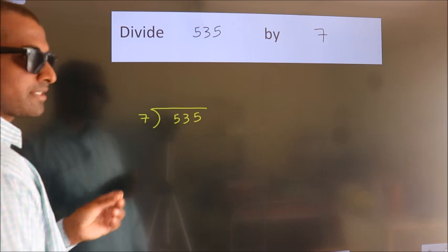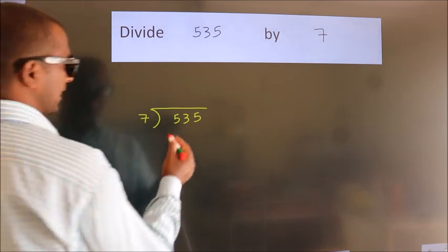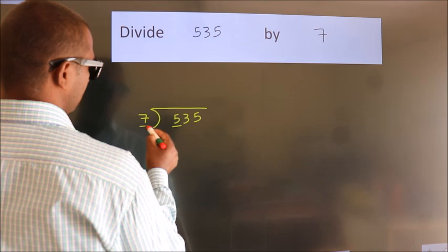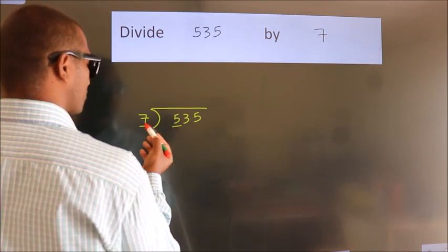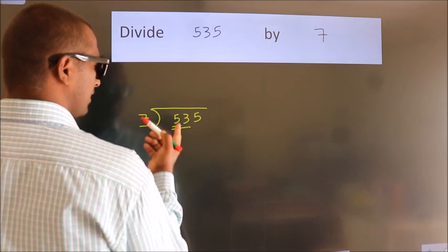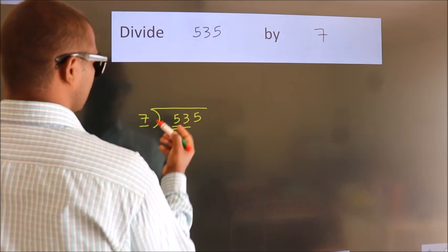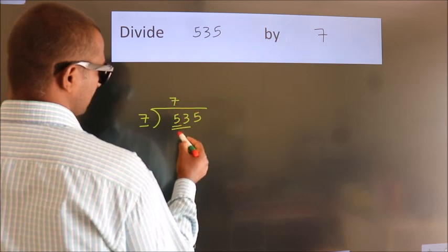This is your step 1. Next, here we have 5, here 7. 5 is smaller than 7, so we should take two numbers, 53. A number close to 53 in the 7 table is 7 times 7 is 49.